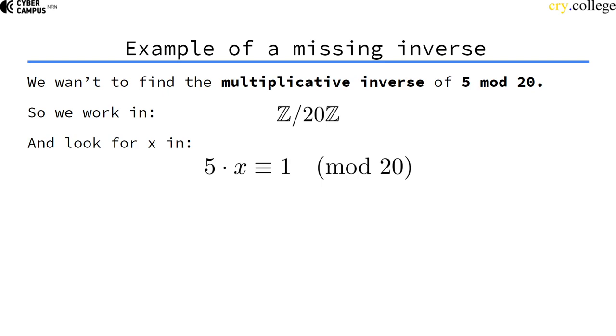We can write this as the equation 5 times x is equivalent to 1 modulo 20, because 1 is the multiplicative identity element, the neutral element. That's the x we need to find—the x is the inverse of 5.